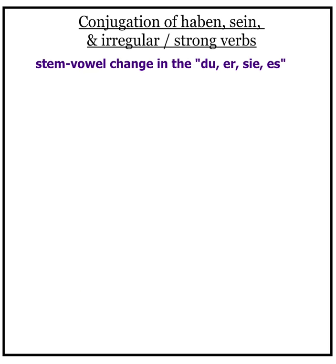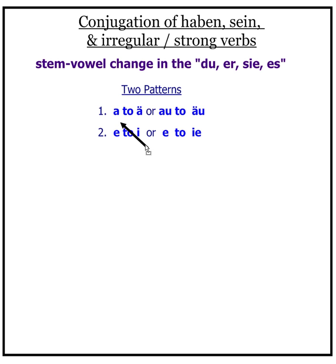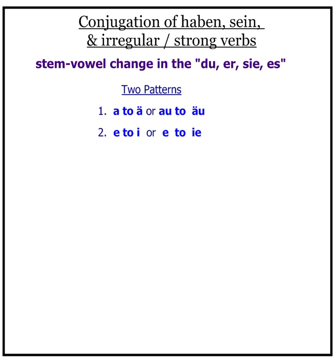There are basically two groups of irregular strong verbs that you'll see — two main stem vowel patterns. The 'a' to umlautered 'ä' that you saw in fahren is one group. The 'e' to 'i' that you saw in helfen is another. So these are your two patterns: 'a' to umlautered 'ä', or 'au' to umlautered 'äu'; and 'e' to 'i', or 'e' to 'ie'. You have to memorize the conjugation of irregular verbs, but knowing these two patterns makes it much easier.